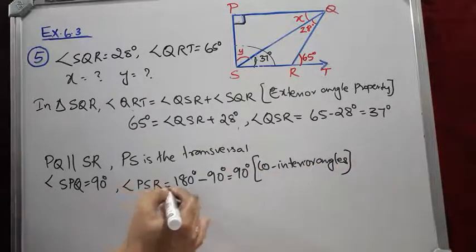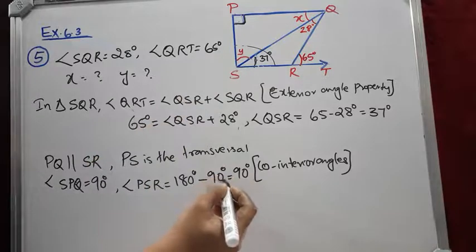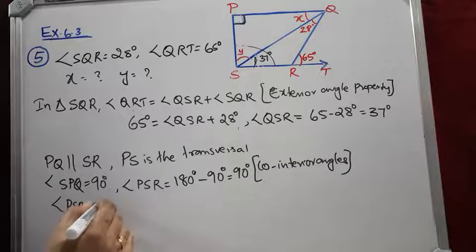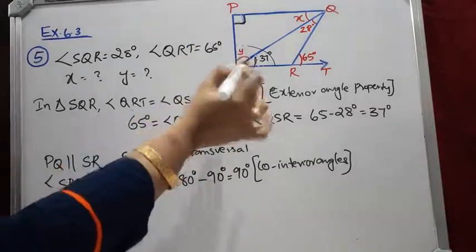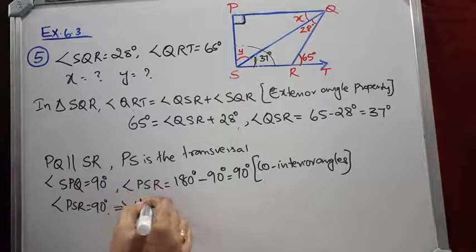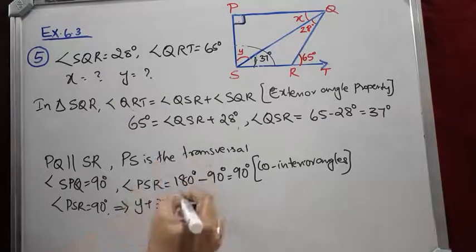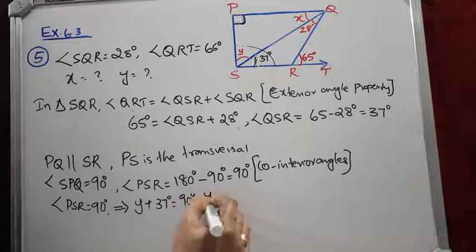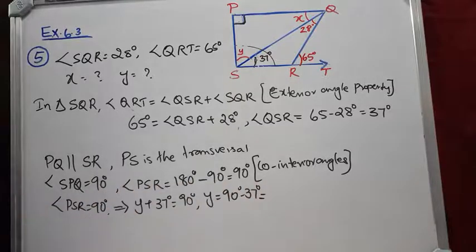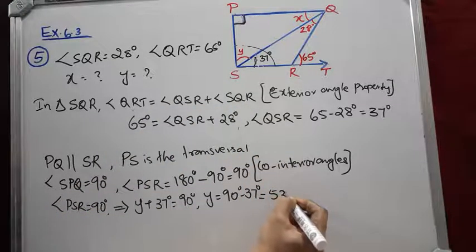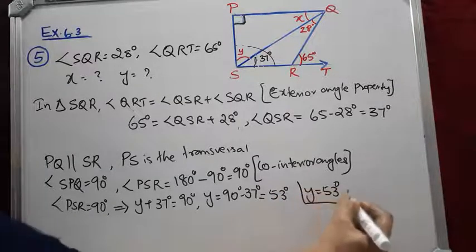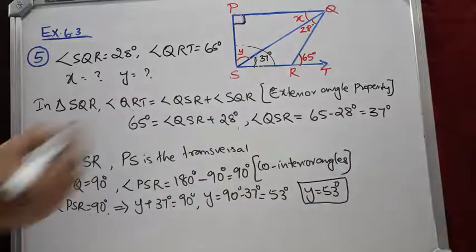So angle PSR equals 90 degrees. Angle PSR is the combination of two angles: Y and 37 degrees. So Y + 37 degrees = 90 degrees, which gives Y = 90 minus 37 degrees = 53 degrees. So angle Y = 53 degrees.